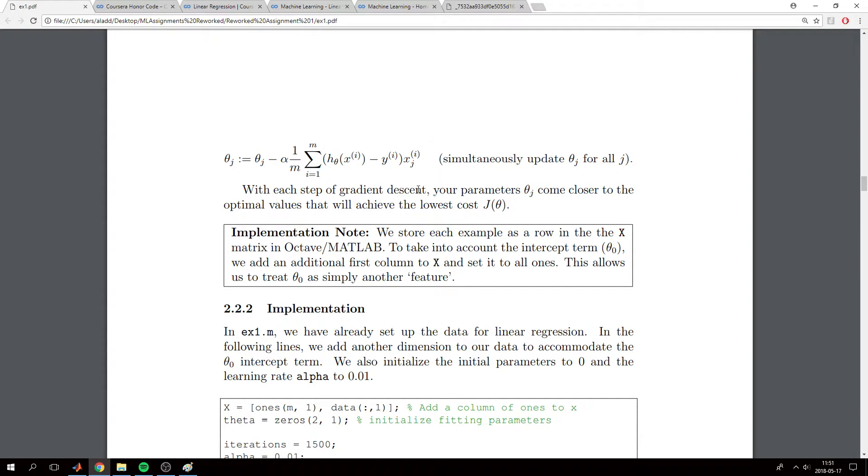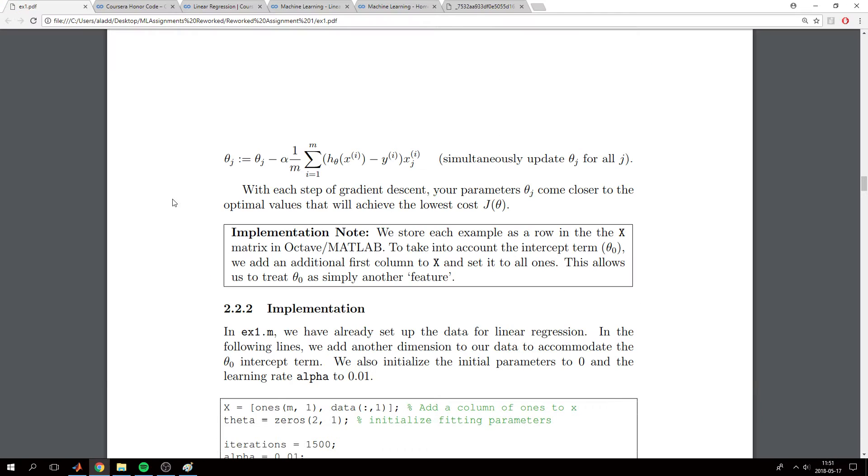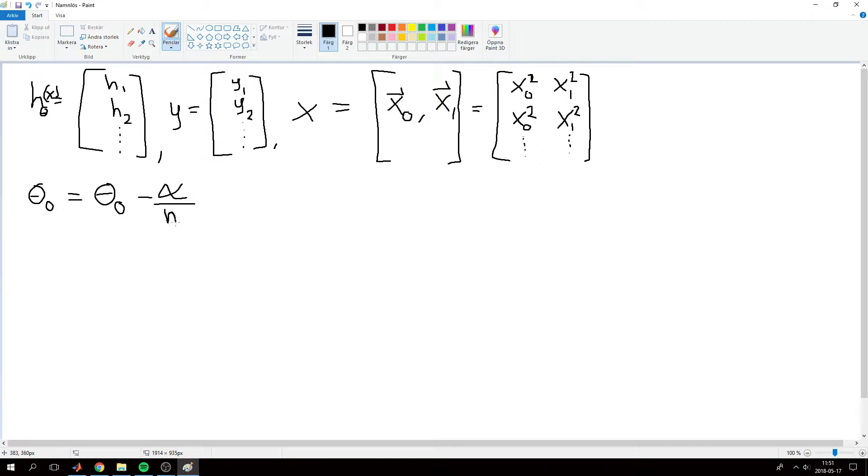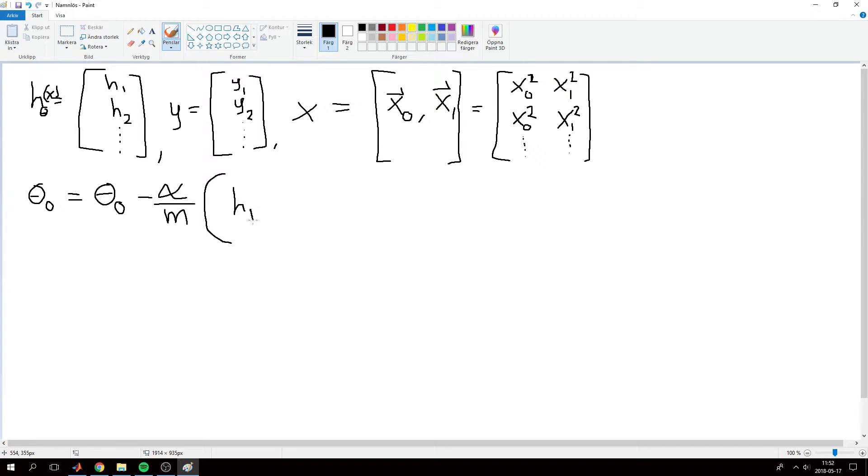Let's try figuring out how the formula will work for our first value of theta. For our first feature, theta_0 will equal theta_0 minus alpha over m, and then it will take h of 1 minus our predicted value minus the accurate value.